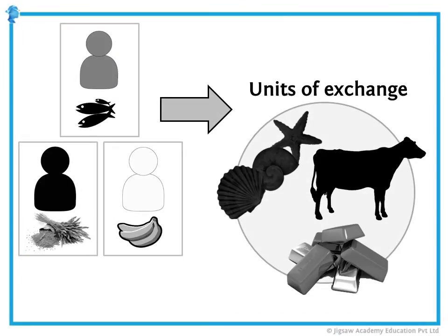Over time, people moved to some common standards of what was valuable, and these were used as units of exchange. In those early days, cattle, seashells, and precious metals were all considered valuable.